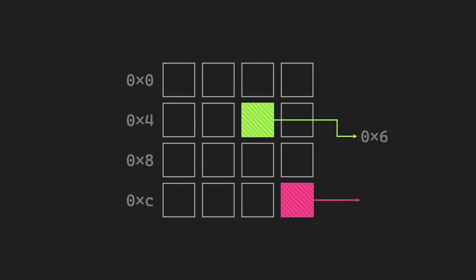And these addresses are usually represented by hexadecimal digits. We have 16 bytes here. We'll be able to identify all of the bytes uniquely on this memory with just one hex digit, 0 through f. This byte here would be at address 6 and the one here at f.